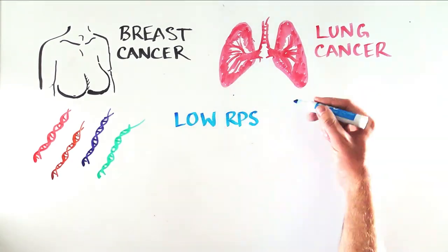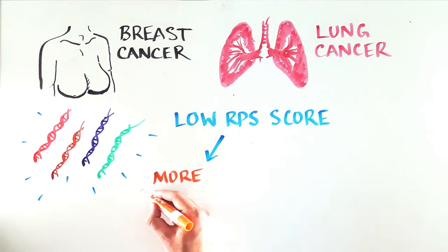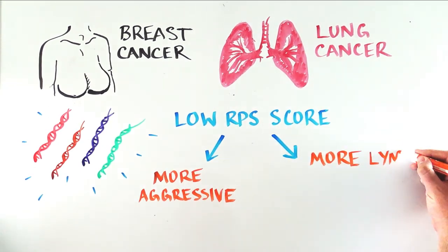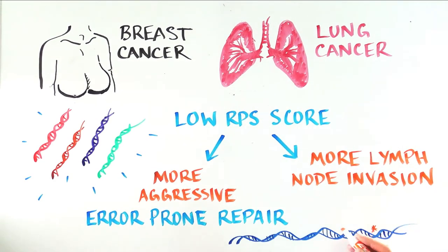Well, the scientists went on to show that breast and lung cancer tumors that had a low RPS score behaved more aggressively and had more invasion of the lymph node and potential for metastasis. These low RPS tumors repair DNA using the error-prone method.